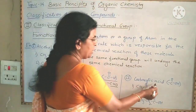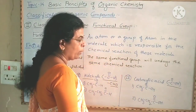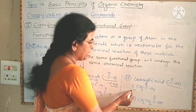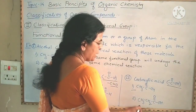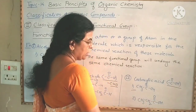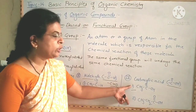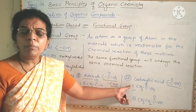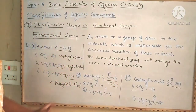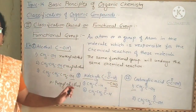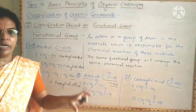The third example is carboxylic acid. The functional group of carboxylic acid is -COOH. Examples of carboxylic acid include CH3COOH, which is acetic acid, and CH3CH2COOH, which is propionic acid. All these compounds undergo similar types of chemical reactions. This shows that a functional group is an atom or group of atoms which characterizes the class of an organic compound.